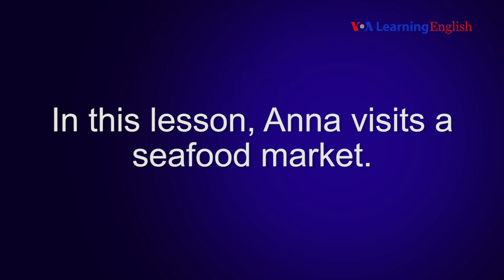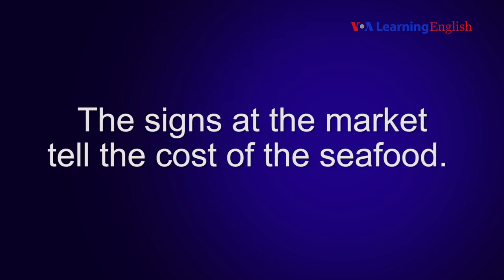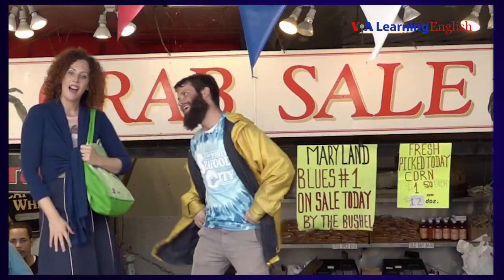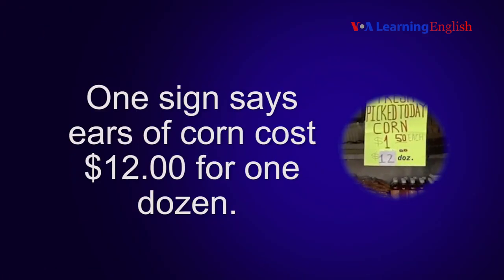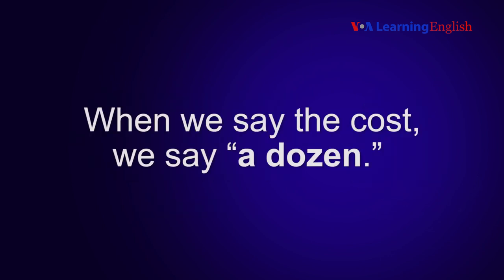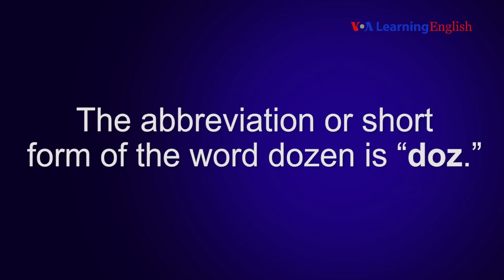In this lesson, Anna visits a seafood market. The signs at the market tell the cost of the seafood. One sign says ears of corn cost $12 for one dozen. When we say the cost of one dozen, we say 'a dozen.' The abbreviation or short form of the word dozen is D-O-Z.